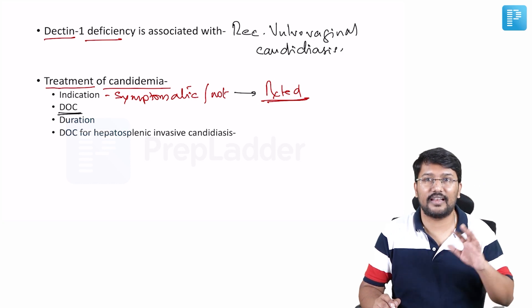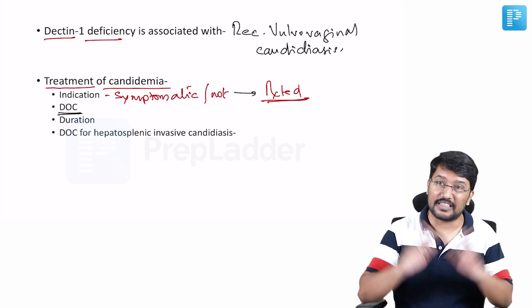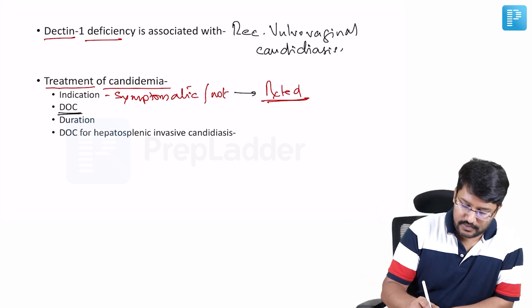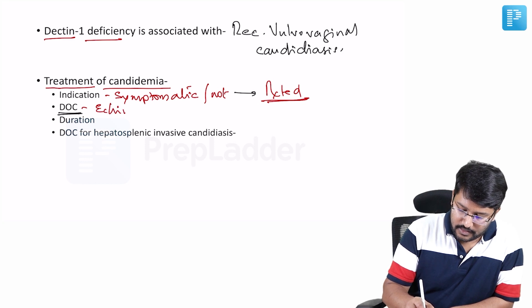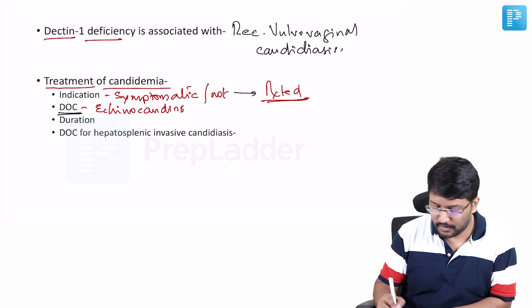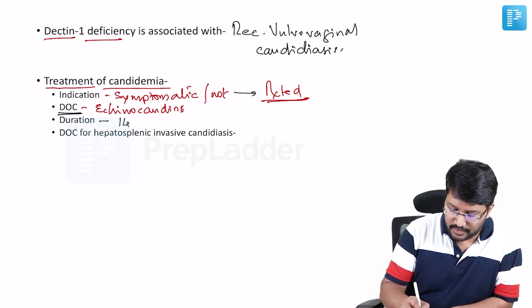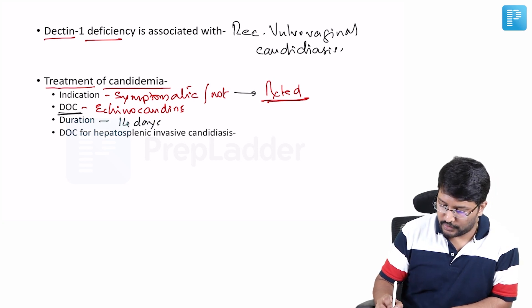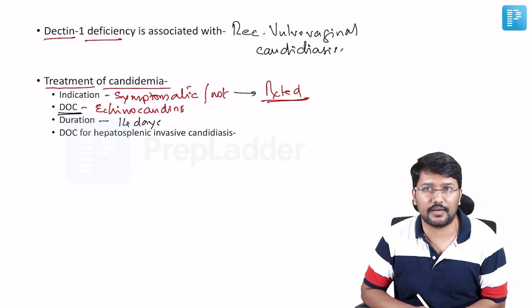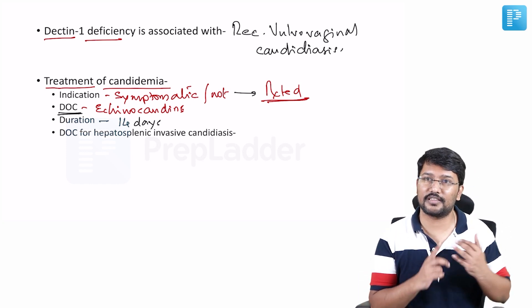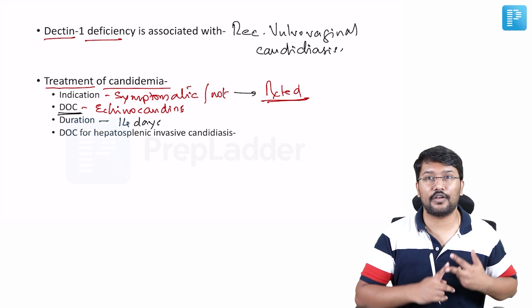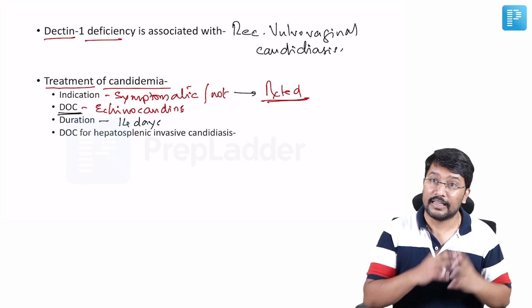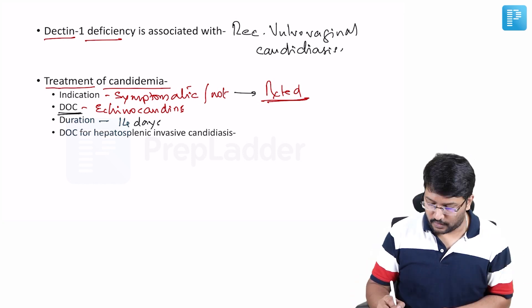Second, what is the drug of choice? The drug of choice whenever you say candidemia or invasive candidiasis in general is echinocandins. So drug of choice is echinocandins. What is the duration of therapy? We generally need around 14 days of echinocandin therapy to achieve good clearance of Candida. So duration is 14 days. Drug of choice is echinocandins. Treat all cases of invasive candidiasis whether they are symptomatic or not.